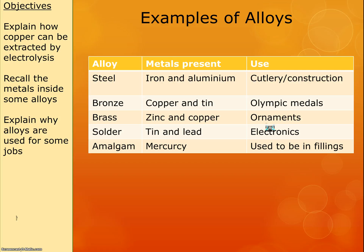Bronze is made up of copper and tin, and we mostly use it for medals. Brass is zinc and copper, and it's often used for ornaments or for plating things to make them look decorative. Solder is made of tin and lead, and it's used to hold electronics together. Amalgam contains mercury and used to be used in fillings — we don't actually use it in fillings anymore because mercury is highly toxic, but you do need to give the answer that it's used in fillings.